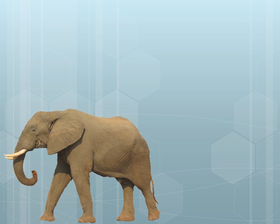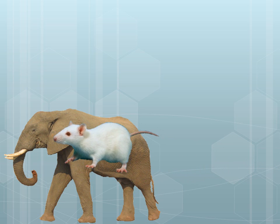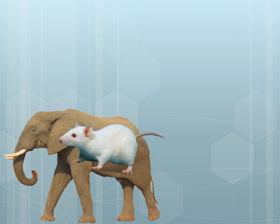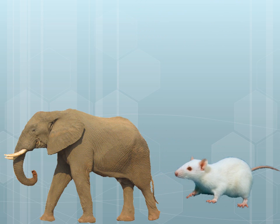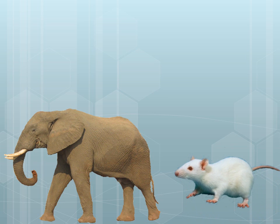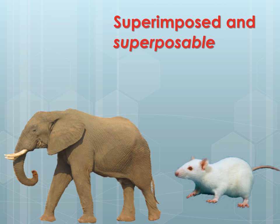Here's another example. Take this elephant and this mouse. When the two are overlapped or superimposed, they are not superposable. However, when we take this mouse and superpose it with this other mouse, the two coincide perfectly, similar to this elephant. These images are said to be superimposed and superposable.